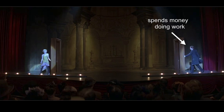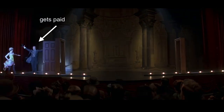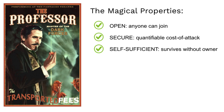We're going to start with people spending money to do work to support the network, and that goes into the magic of consensus, and at the end people are going to get paid. The magical properties of this are that we have a system that's open — non-excludable, anyone can join — it's secure with a quantifiable cost of attack, and most importantly it's self-sufficient. This is the key property that Satoshi invented: a network that can survive without an owner, because it's only if it can survive without an owner that it can be trustless and pay for itself.